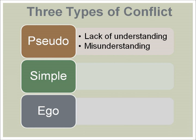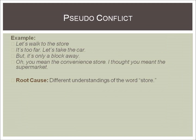Pseudo-conflict comes from a lack of understanding or a misunderstanding. For example, the following dialogue illustrates pseudo-conflict because the conflict is caused by different understandings of the word 'store.' Speaker one says, 'Let's walk to the store.' Speaker two says, 'It's too far. Let's take the car.' Speaker one says, 'But it's only a block away.' And speaker two replies, 'Oh, you mean the convenience store. I thought you meant the supermarket.'